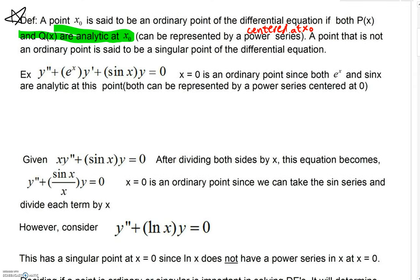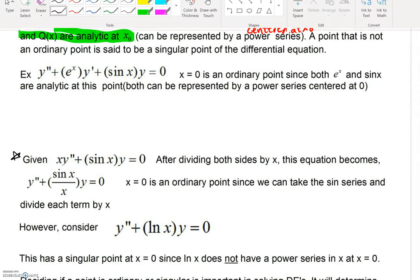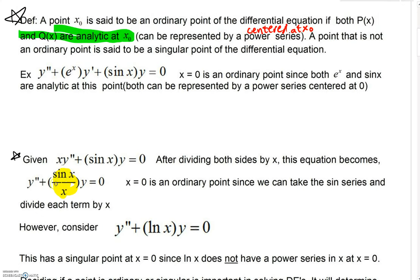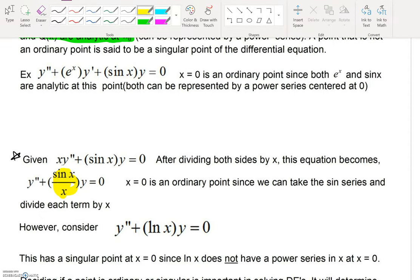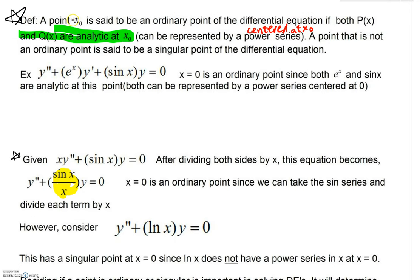Sometimes kids will say, I get it, you can't have anything with an x in a denominator. But look, here's a great example where actually you can. Next example, given that x y double prime plus sine of x y equals 0, when you divide by x, you will get sine of x all over x, which is actually analytic at x equals 0. x equals 0 is an ordinary point. This can seem far-fetched. You might say, I don't think you can write a power series like that. Actually, we can.